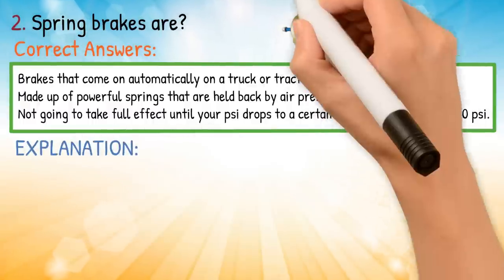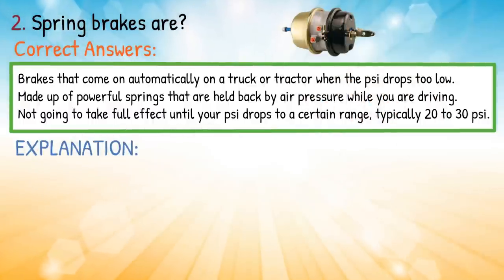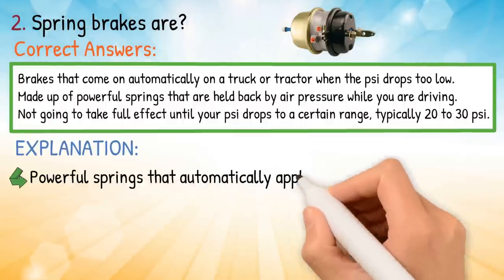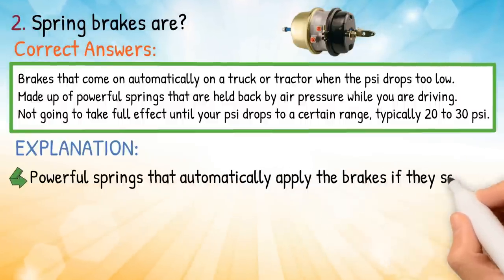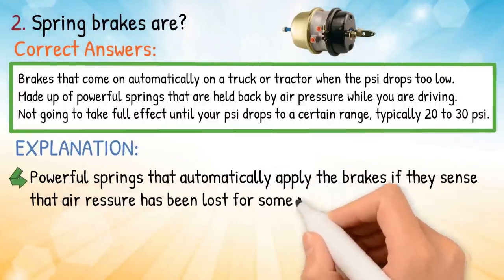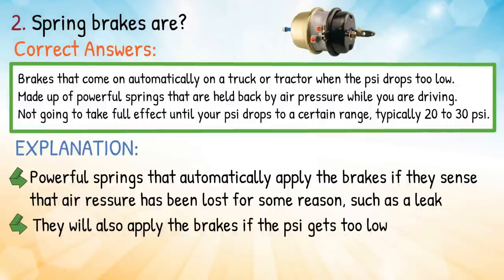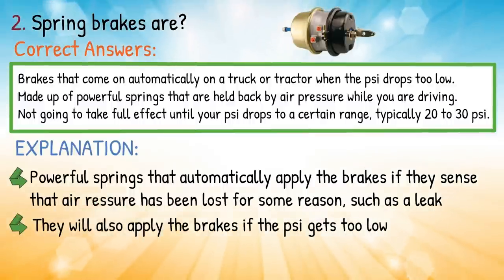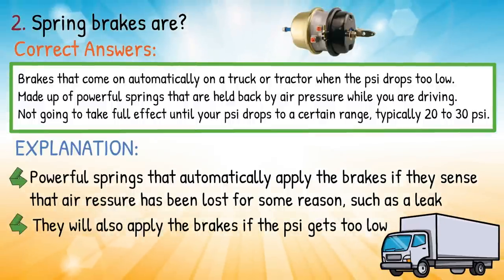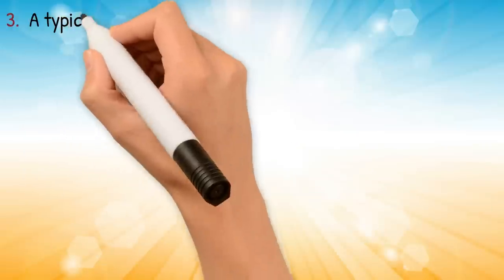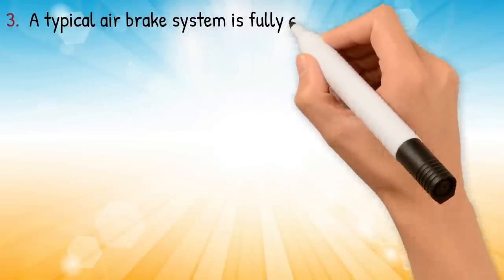Explanation: spring brakes are an important backup system — powerful springs that automatically apply the brakes if they sense that air pressure has been lost, such as from a leak. They will also apply the brakes if the PSI gets too low, although ideally you should take control of your brakes before that happens. Question three: a typical air brake system is fully charged at —